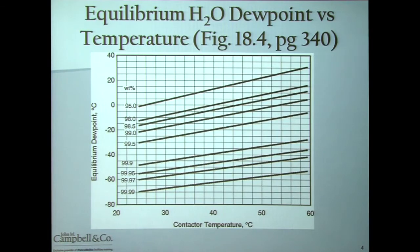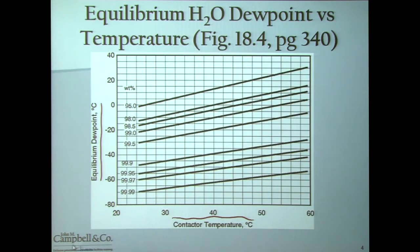I don't intend to go through the entire evaluation procedure, but instead I'd like to focus strictly on the determination of the lean glycol concentration required to meet a water dew point specification. If you have a system where you're trying to meet a water dew point spec, we use the chart shown in the diagram, which plots equilibrium dew point versus contactor temperature. Because TEG loves water so much, it's fairly independent of pressure, so we can use this diagram to give us an idea of what to expect in a TEG system.